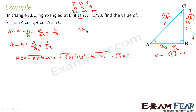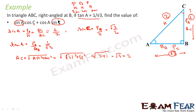Similarly, sin C equals P of C divided by H. Since C is the frame of reference, the perpendicular for C is AB, which is root 3, and H is 2. So sin C equals root 3 by 2. For cos A, it is B of A divided by H, which is root 3 by 2.